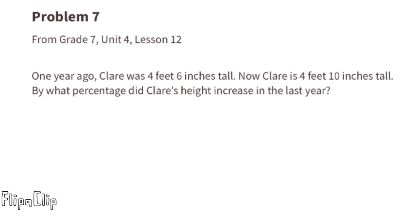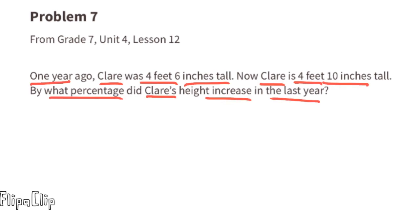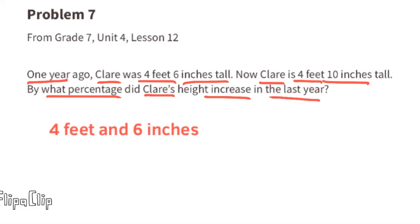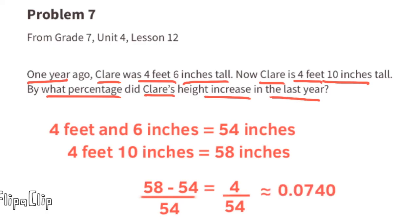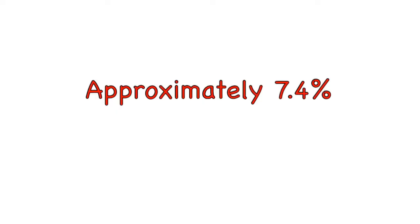Problem number seven from 7th grade Unit 4 Lesson 12. One year ago Claire was four feet six inches tall — that's 54 inches. Now Claire is four feet ten inches tall — that's 58 inches. The percentage increase is the difference divided by the original height: 58 minus 54 is 4, and 4 divided by 54 is approximately 0.074, or about 7.4 percent. Claire's height increased approximately 7.4 percent over the past year.